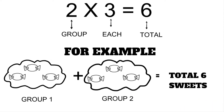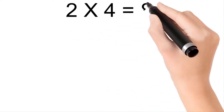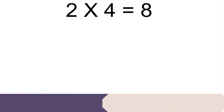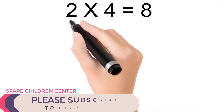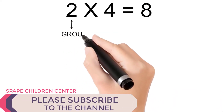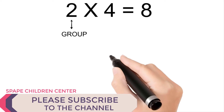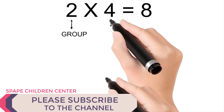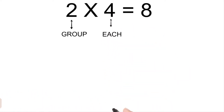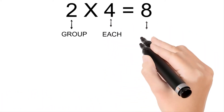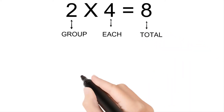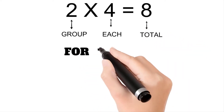Two times four is eight. Two is group, four is each, and eight is total.